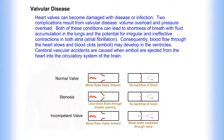Consequently, blood flow through the heart slows and blood clots may develop in the ventricles. Cerebral vascular accidents are caused when emboli are ejected from the heart into the circulatory system of the brain.